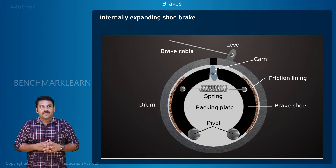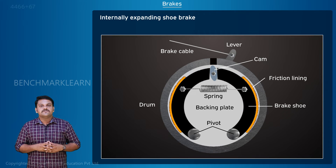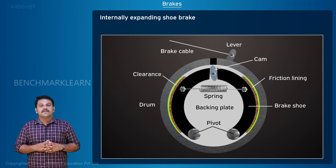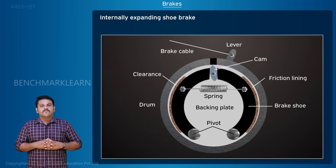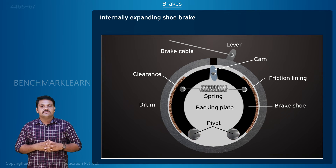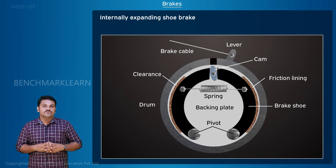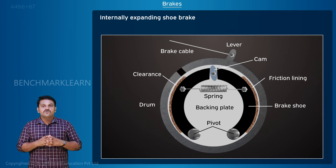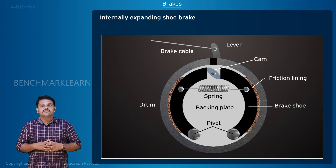Internally expanding shoe brake: in an internally expanding shoe brake, there are two C-shaped shoes lined with a friction material placed inside the rotating drum. A small clearance is provided between the internal surface of the drum and the friction lining of the shoe. One end of both brake shoes is pivoted on a stationary backing plate, and the other end of both shoes is connected by a spring. A cam operated by a lever is placed between these ends of the shoes. When braking is required, a force is applied on the lever by the action of the braking pedal, and when the lever moves, the cam turns.